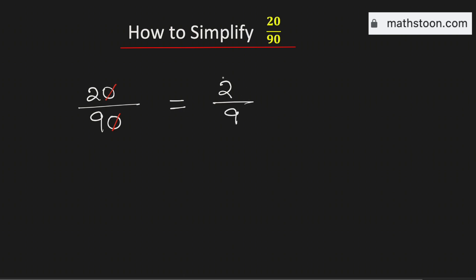Now, only 1 can divide both 2 and 9, so we cannot simplify this fraction further. Therefore, 20 over 90 simplified is equal to 2 over 9, and this is our final answer.